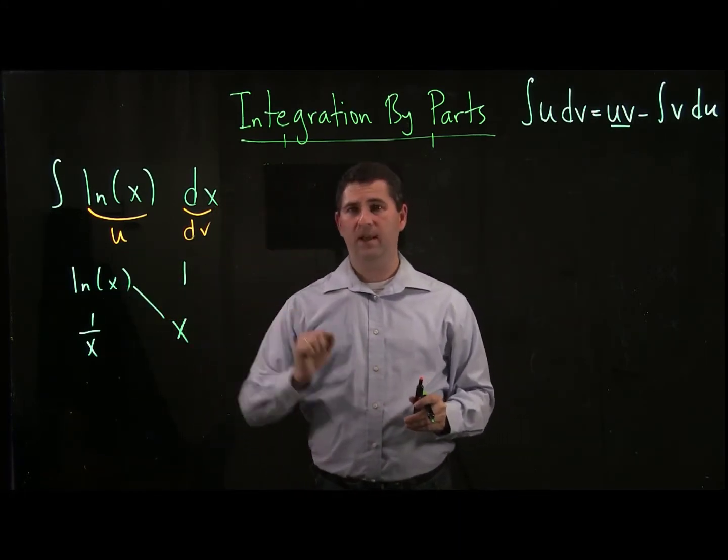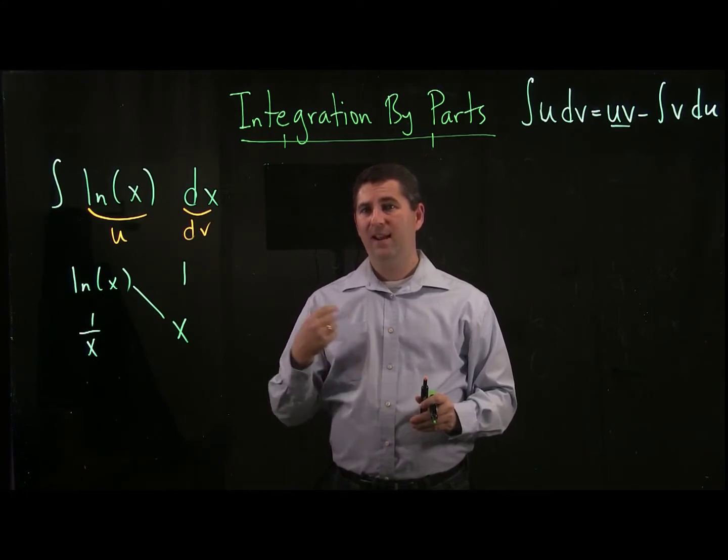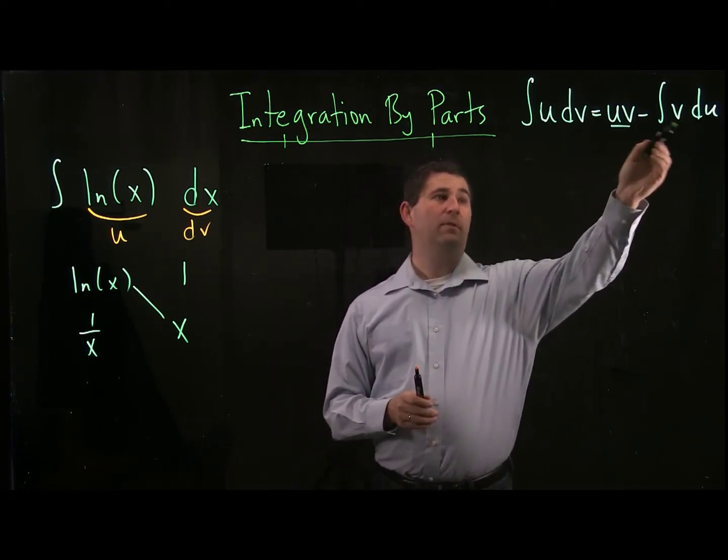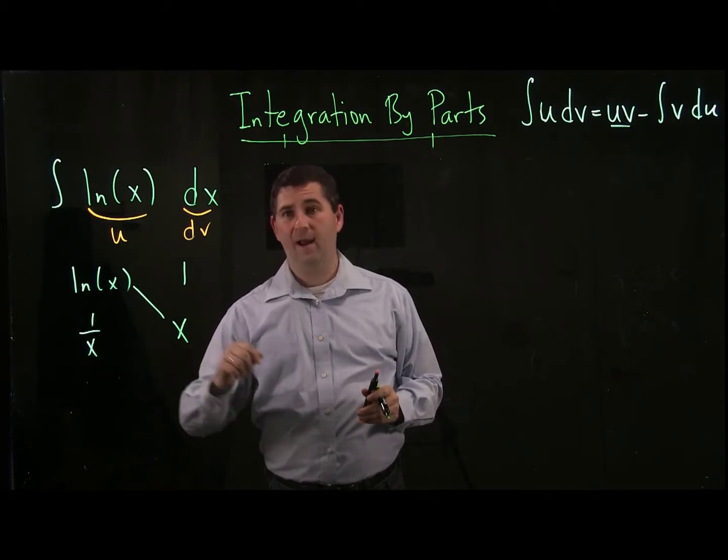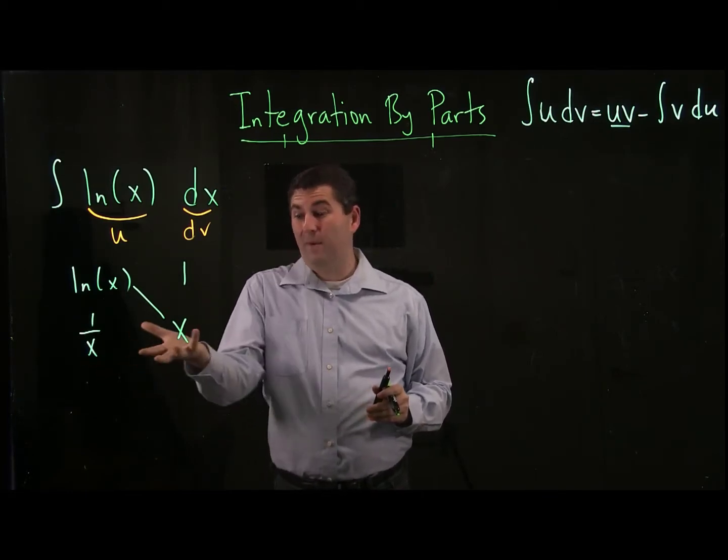Now I know that when I do integration by parts, the first thing would be the uv. So I'd get the x times ln of x. The next thing would be to subtract the integral of v du. In this case, there's my v and my du would be 1 over x dx, and that's already going to be 1.